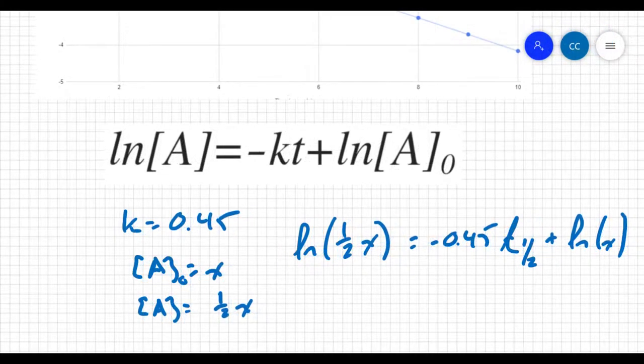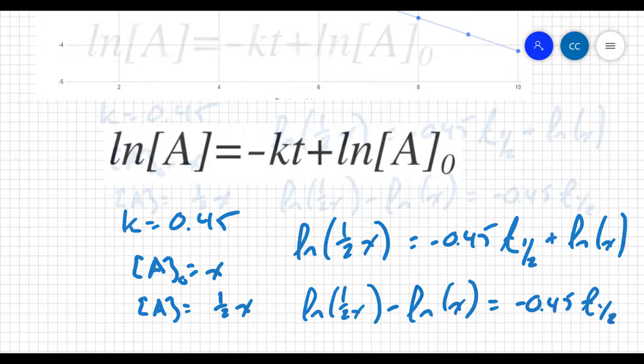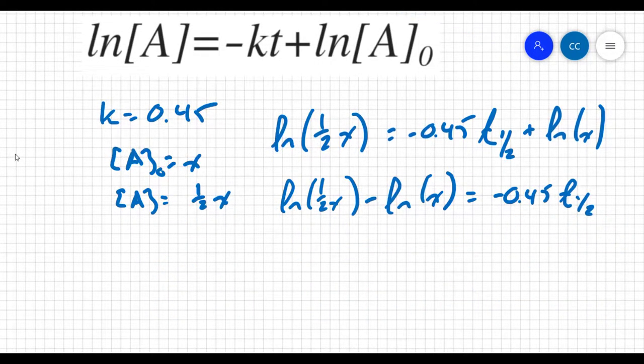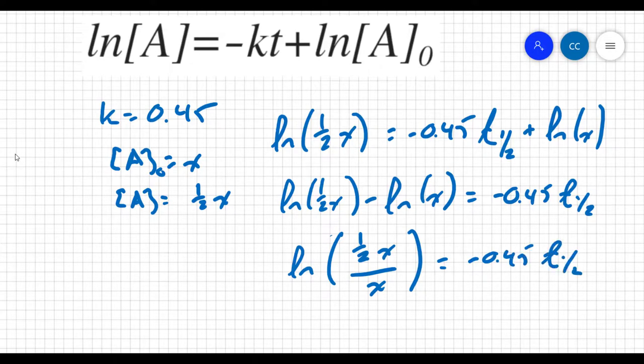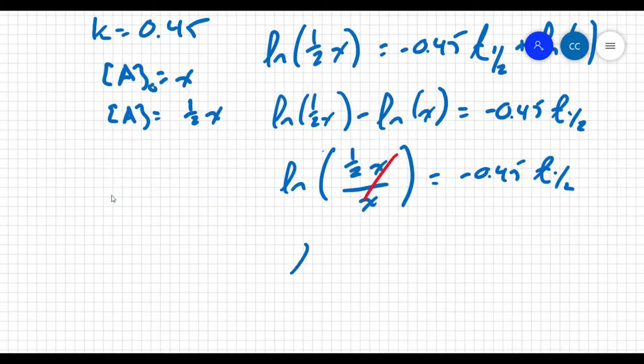Alright, well, we can slide things around. We can say the natural log of one half x minus ln of x equals negative 0.45 times my half life. These are exponential functions here, the natural log. So if you're subtracting one from the other, that's the same thing as dividing. So I could say the natural log of one half x divided by x equals negative 0.45 times my half life. Well, my x's now cancel out.